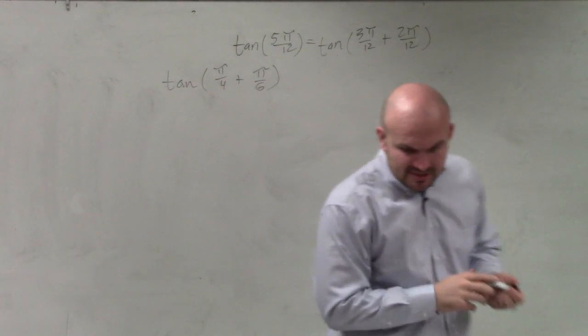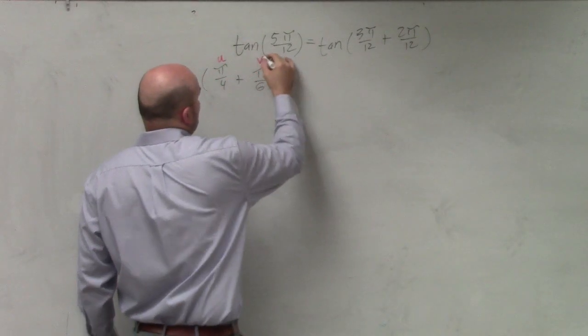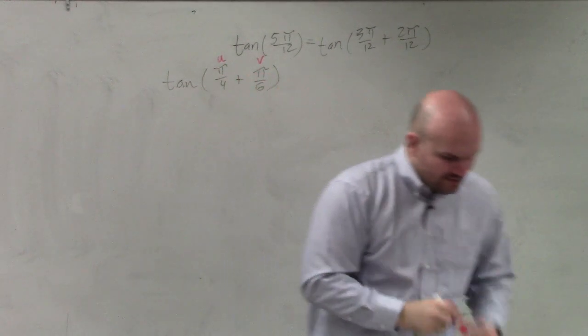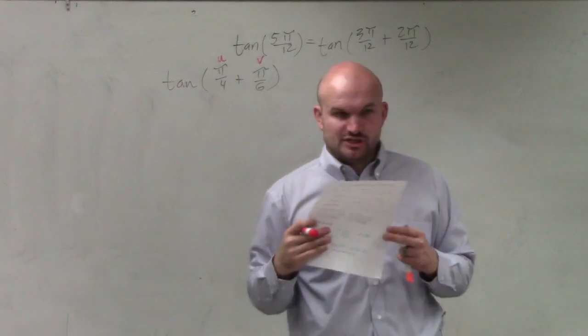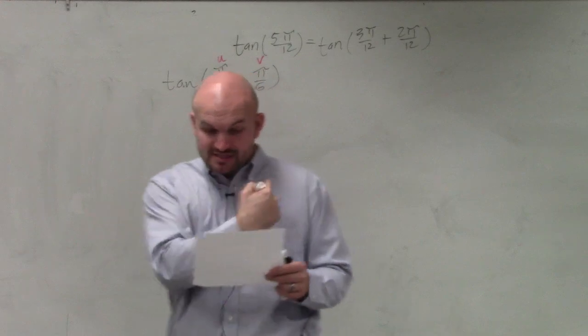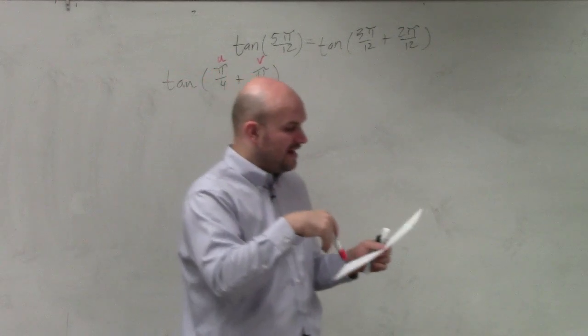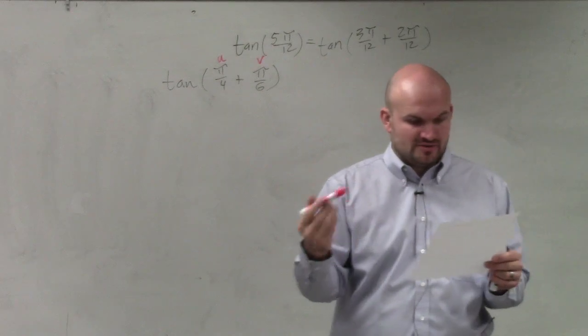Now, if you guys remember in the sum and difference formula, what I told you guys to do was label this as your u and label this as your v. Then, as you take your formula sheet, the sum and difference formula for tangent, or the sum formula, is tangent of u plus tangent of v divided by 1 minus tangent of u times tangent of v.